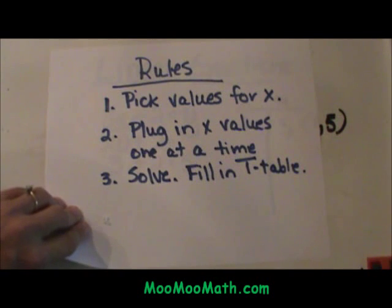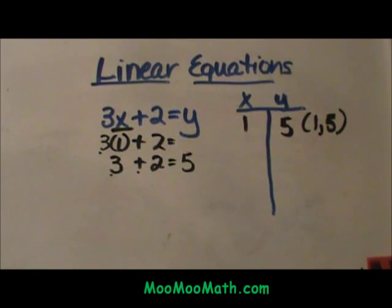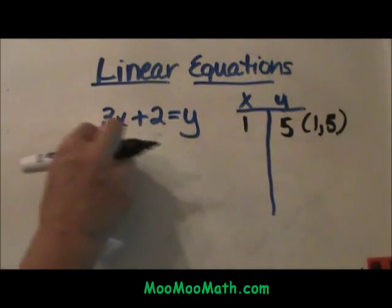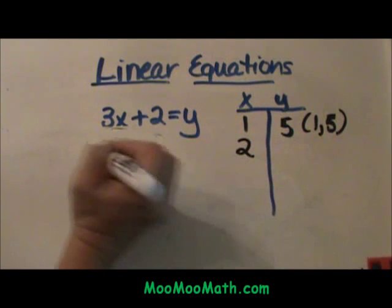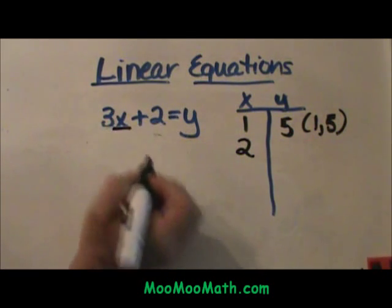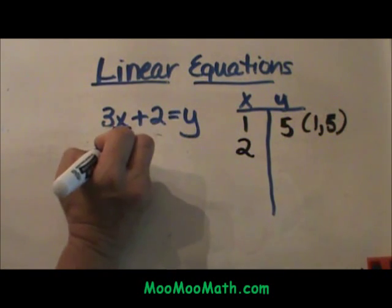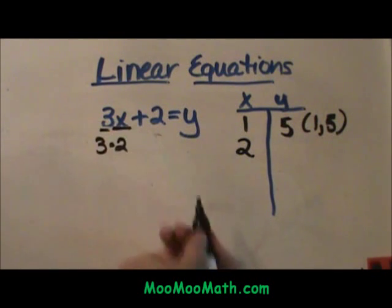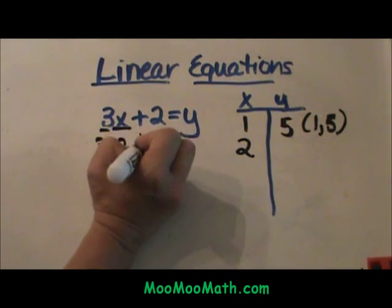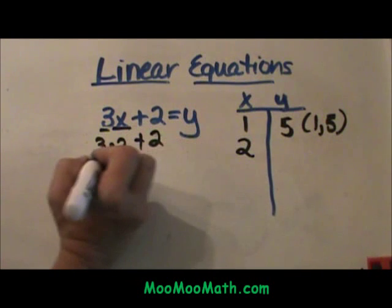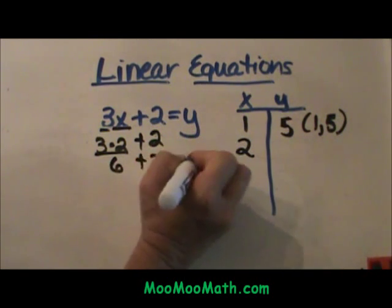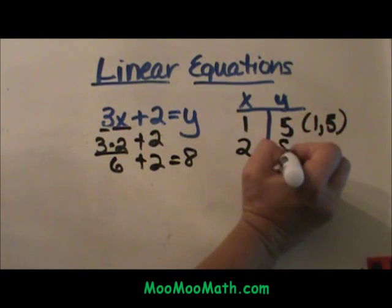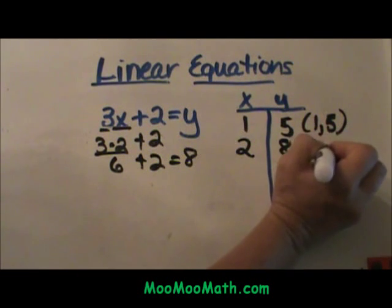So we have worked through one example, let's work through another one. This time let's plug in a 2 for x and then we are going to plug in a negative number. So I am going to plug a 2 in for x. So 3 times 2, when you have a variable next to a coefficient that does mean to multiply, plus 2. So 3 times 2 is 6 plus 2 is 8. So 2, 8 is my output.